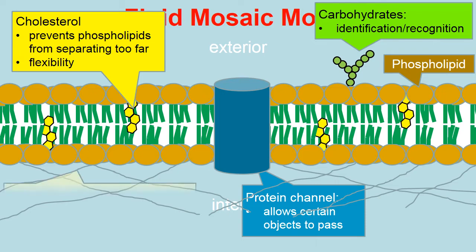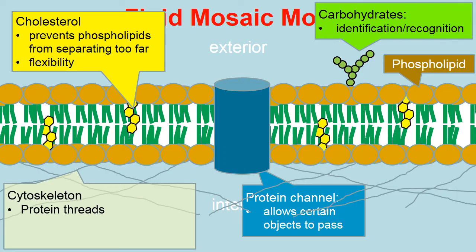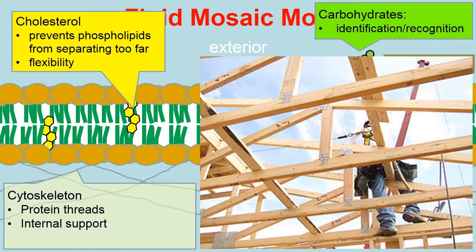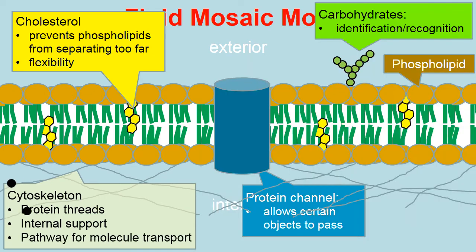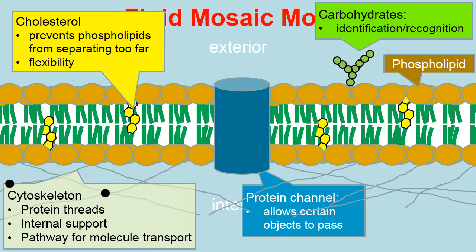Another component is the cytoskeleton. Notice the threads that crisscross and zigzag on the inside of the cell — these are the protein threads that make up the cytoskeleton. There are different kinds: microtubules, microfilaments, and intermediate filaments. The proteins of the cytoskeleton help give internal support — like the framing on a house that keeps it from toppling over. They also serve as a pathway for molecules to transport and travel along, with molecules traveling throughout the cell and even exiting from it along these protein threads.